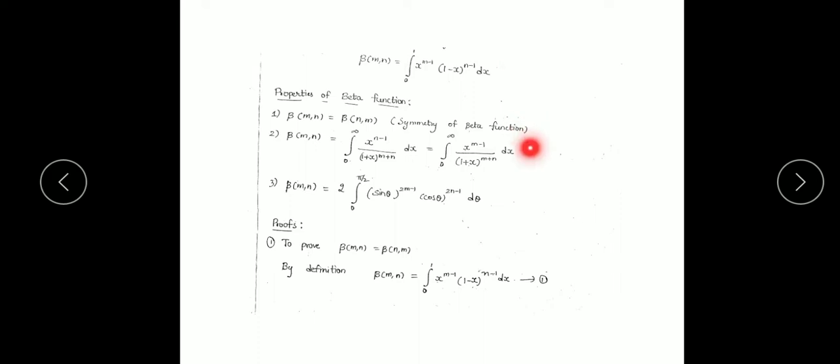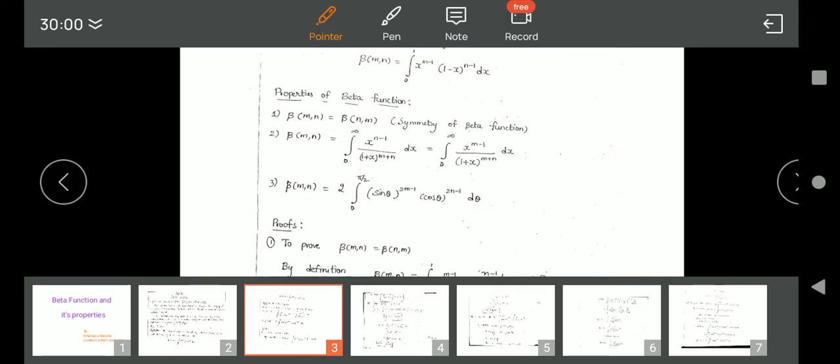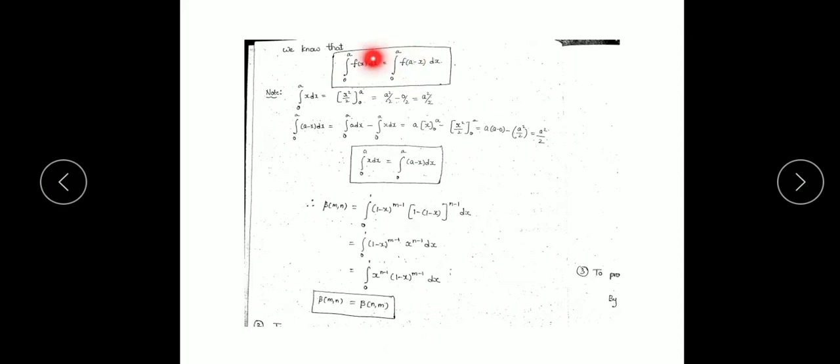Let's look at the proofs of these properties. For the first property, we need to prove that β(m, n) = β(n, m). By definition, β(m, n) = integration from 0 to 1 of x^(m−1) (1−x)^(n−1) dx. We will make use of the important equation: integration from 0 to a of f(x) dx = integration from 0 to a of f(a−x) dx.